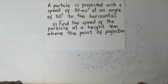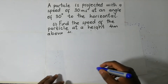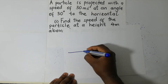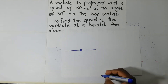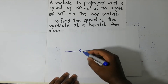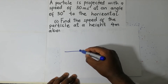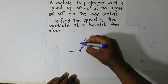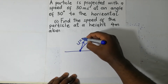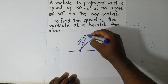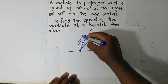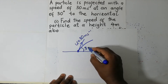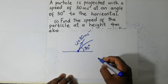My name is Andrangakuramia. This is Kisembu Academy. So we have a particle here, projected with a speed of 30 meters per second upward at an angle of 30 degrees to the horizontal.